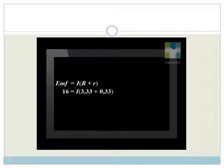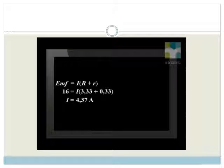Now let's use our EMF formula to calculate current. We find the new current is 4.37 amperes. Notice that this is higher than the previous current because we now have more resistors in parallel.